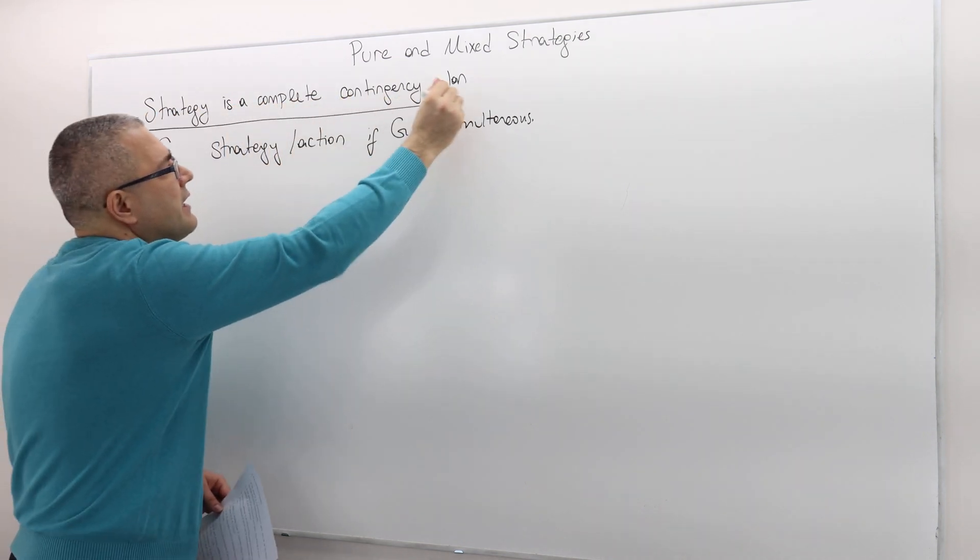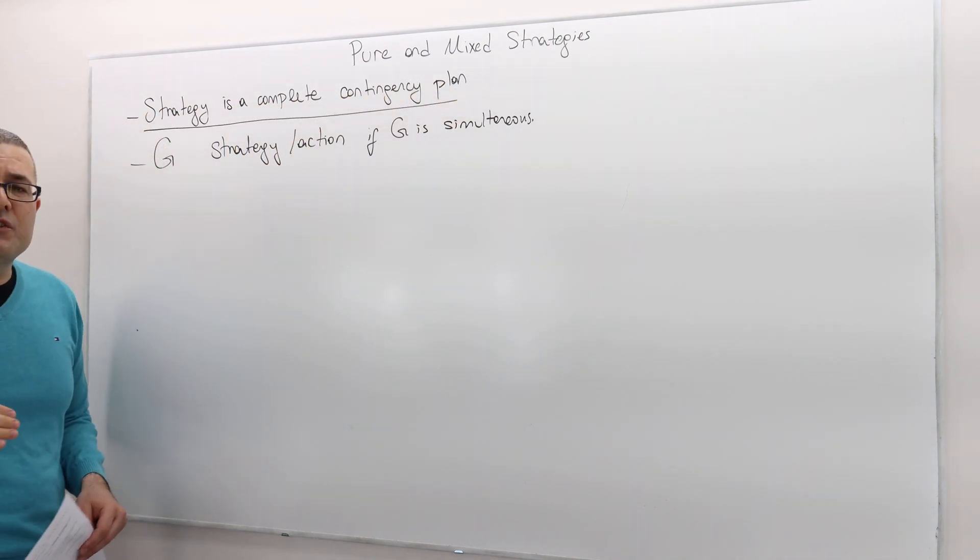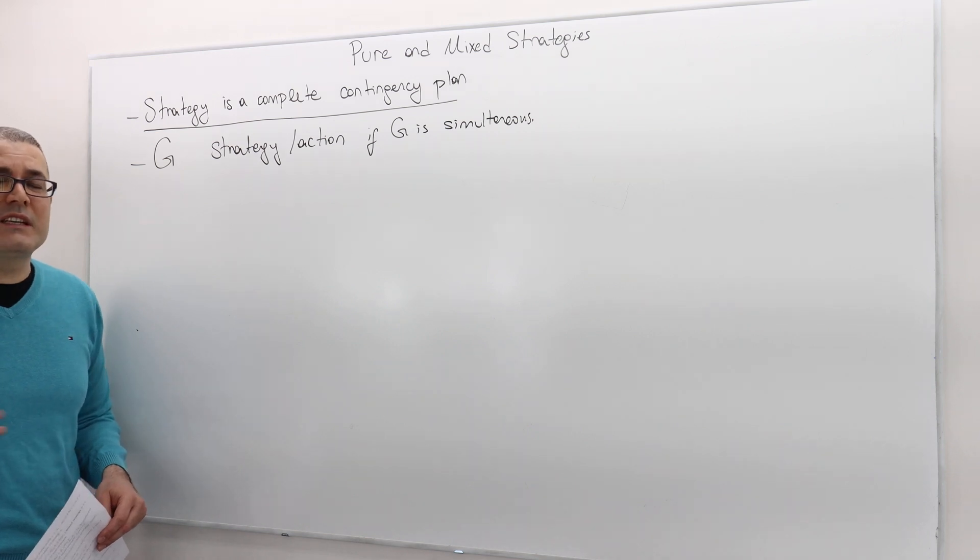What is a strategy in a dynamic game? Strategy is a complete contingency plan. It's basically a roadmap which tells us what action to take at every decision note the player may have.